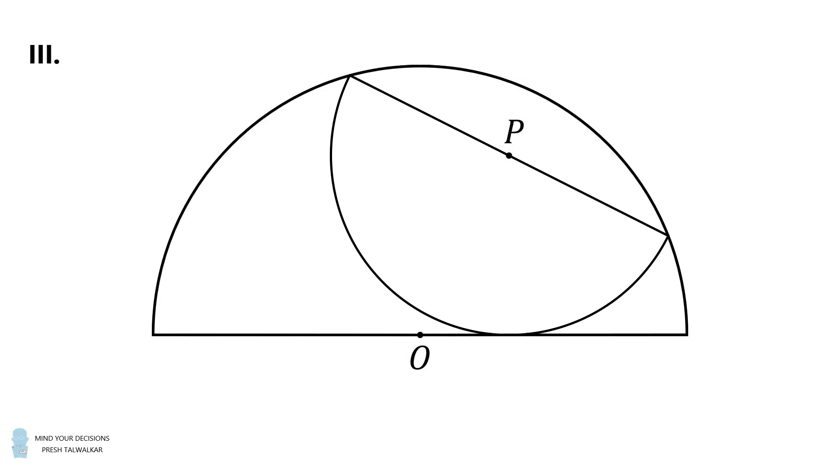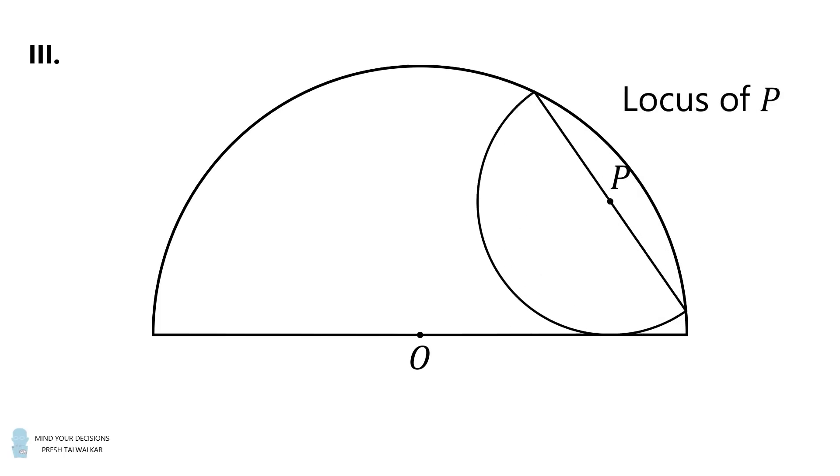Part 3: Label the center of the large semicircle as O, and the center of the inscribed semicircle as P. Consider all such inscribed semicircles and their center point P. The question is what is the locus of P? That is, what is the set of points that describes all possible positions of P?